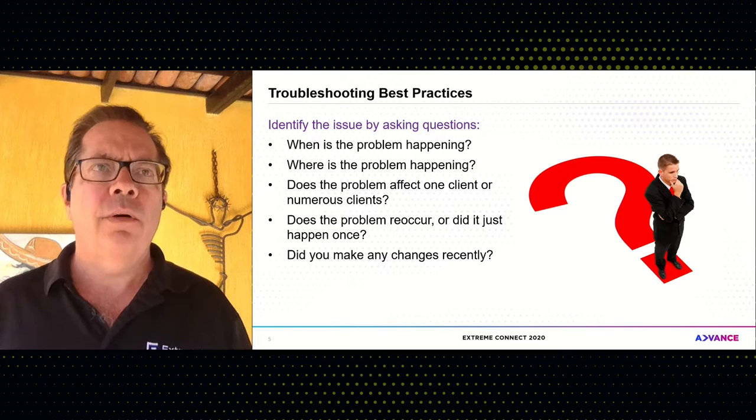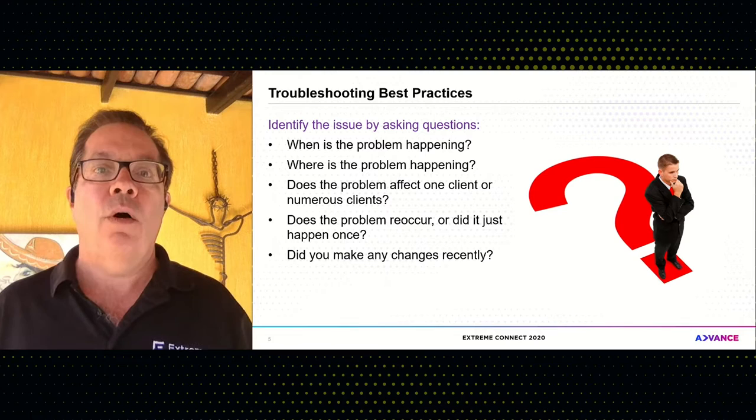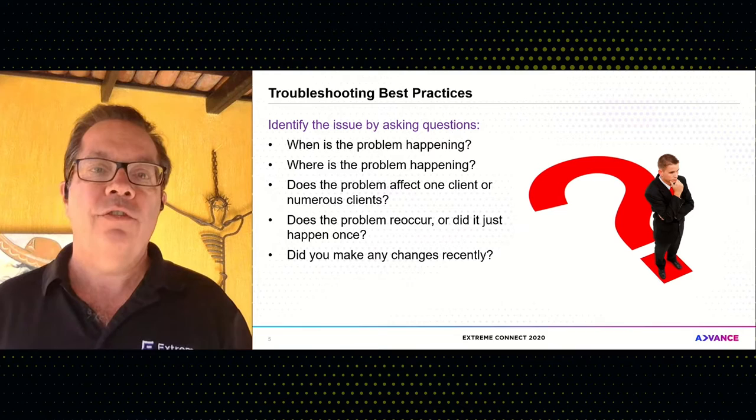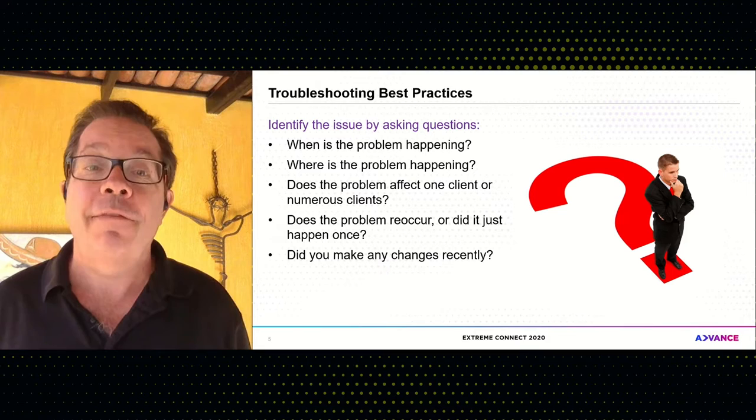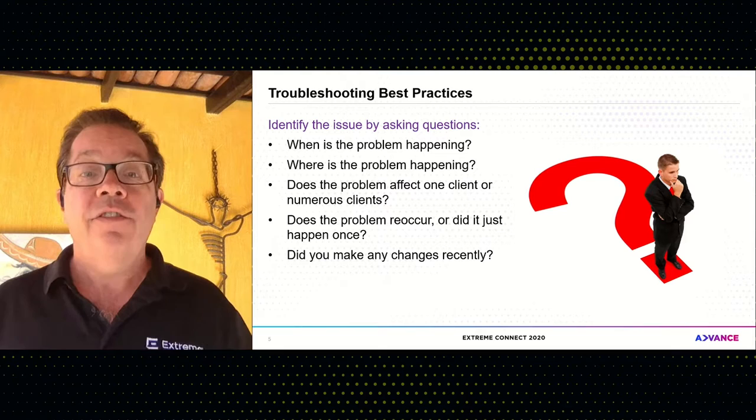Where is the problem happening? If you have a campus with multiple buildings and it's happening in only one building, maybe it's isolated to one AP or a couple of access points. And here's an important one: does this problem affect one Wi-Fi client or numerous clients? If it's only affecting one client and everybody else is fine, you've isolated the problem — it's that one client.